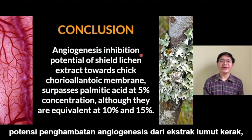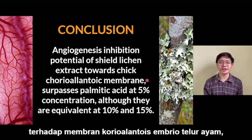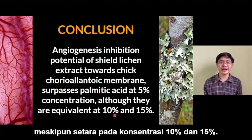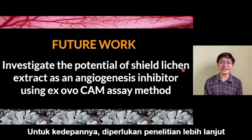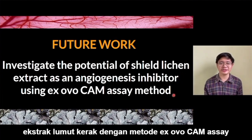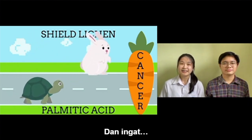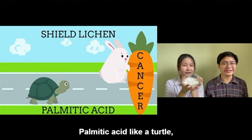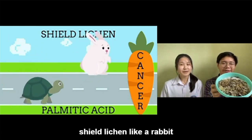Based on our research, we conclude that the angiogenesis inhibition potential of sheathlichen (CHLK) extract towards the chorioallantoic membrane surpasses palmitic acid at 5% concentration, although they are equivalent at 10% and 15%. For future work, we can investigate the potential of CHLK extract as an angiogenesis inhibitor using the ex ovo chorioallantoic membrane method. That's all for our presentation. And remember: fighting cancer — palmitic acid like a turtle, CHLK like a rabbit. Thank you!